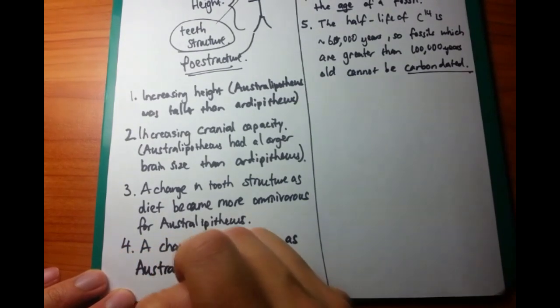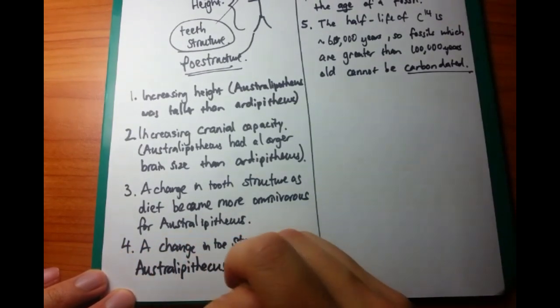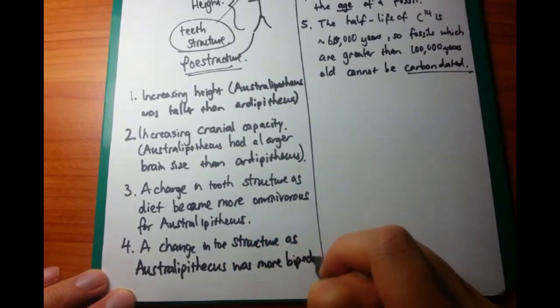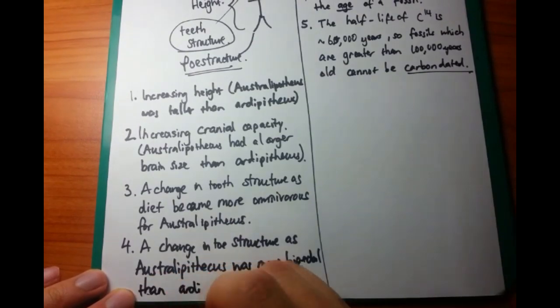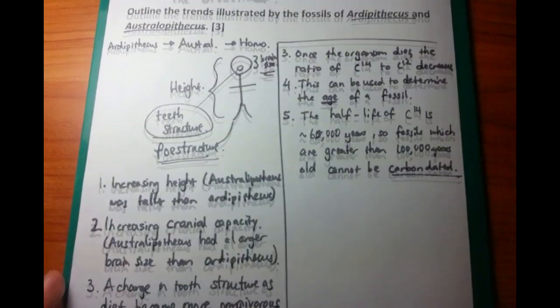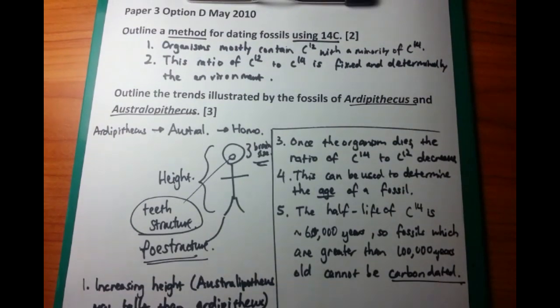And with Australopithecus being a somewhat more advanced version, compared to Ardipithecus, the toe structure was more suited to be bipedal. So, bi-two, pedal means feet. So, you're able to stand on two feet. And that's the final point for this question.